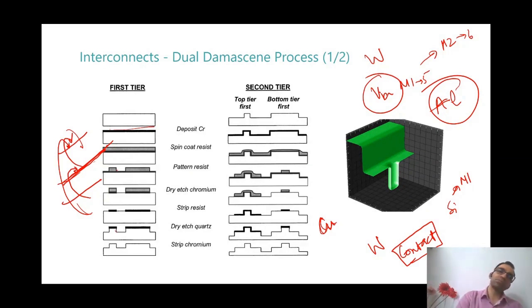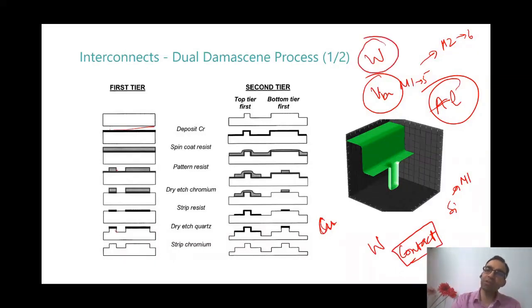That is why copper usage was avoided in the semiconductor manufacturing process for a very long time, until we were hit with the wall. Everywhere there is copper today, but the contacts still remain to be tungsten.